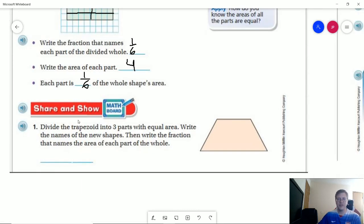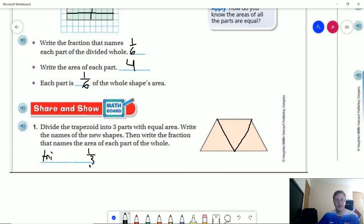So for number one for Share and Show, we want to divide the trapezoid into three equal parts. So I'm going to give you a moment to think about how you would do that. Go ahead and pause the video if you need to. This one's much easier than some people give it credit for. And when you're ready, go ahead and hit play. All right. So one of the easiest ways that we can do this is to actually make this shape and make a triangle inside. And then we are going to have three different triangles. And so we are going to say that we are going to have a triangle for the name of the new shape. And the fraction that names each part of the whole would be one-third.